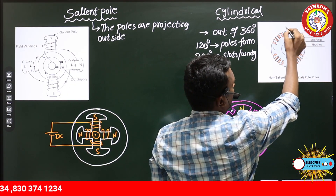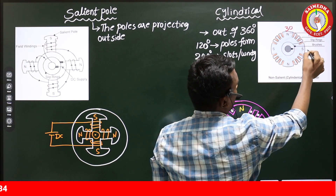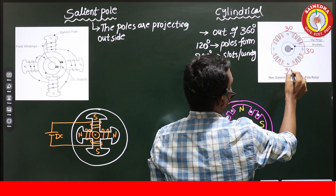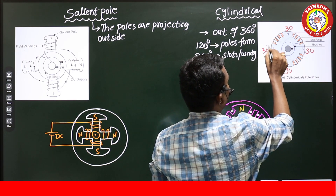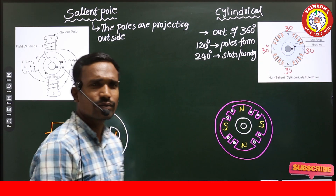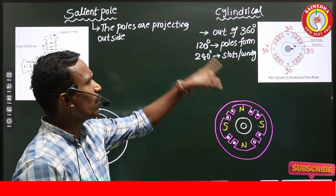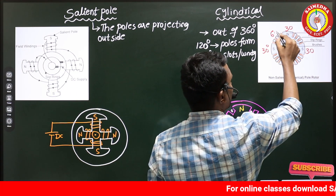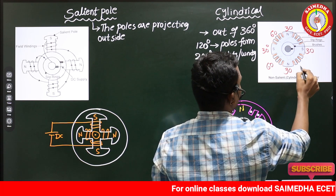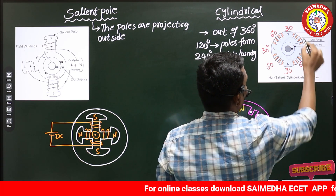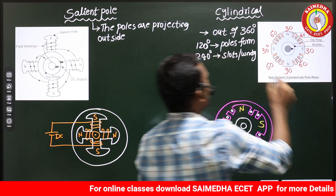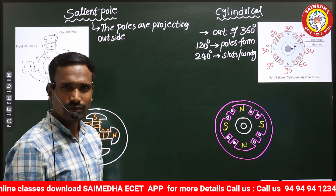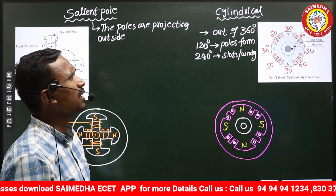To clarify: 30 degrees of rotor periphery times four sections gives 120 degrees for poles formation, and the remaining 60+60+60+60 = 240 degrees is used for slots or winding.